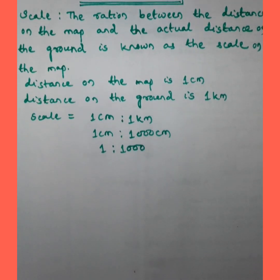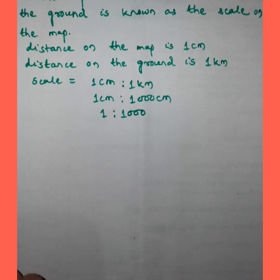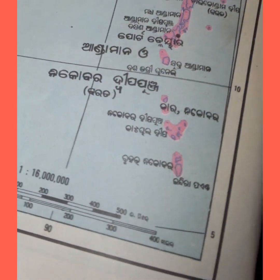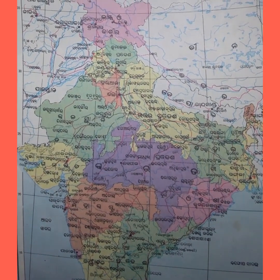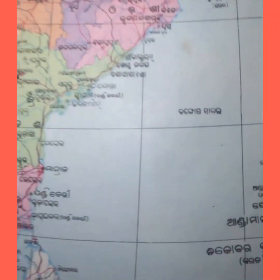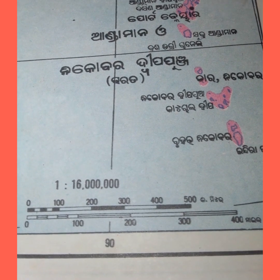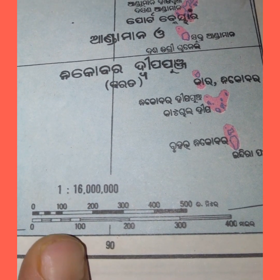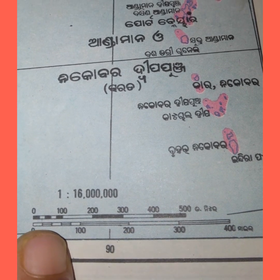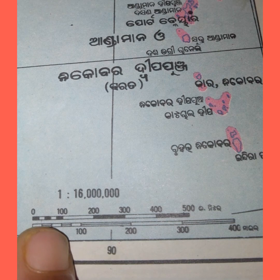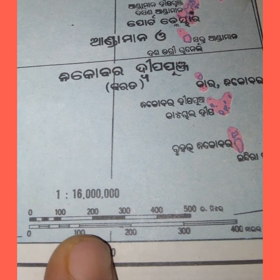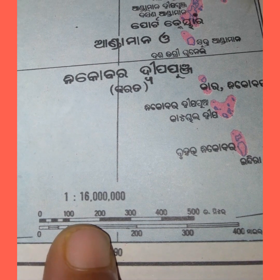Let's see the scale on a map. This is the political map of India. Here the scale is written: 1 is to 1 crore 60 lakh. The distance on the map is 1 unit and the distance on the ground is 1 crore 60 lakh.